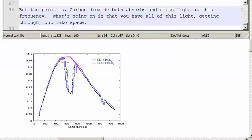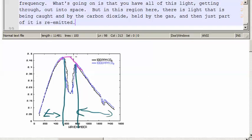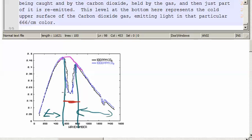Carbon dioxide has a particular vibrational mode which is highly sensitive to the frequency of 666 per centimeter. But the point is, the carbon dioxide both absorbs and emits light at this frequency. You have all of this light getting through out into space. But in this region here, you have light that is caught by the carbon dioxide, held by the gas, and then just part of it is re-emitted. This level at the bottom here represents the cold upper surface of the carbon dioxide gas emitting light in that particular 666 per centimeter color.